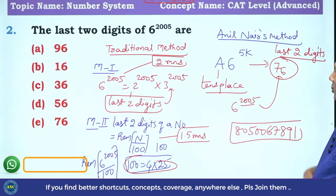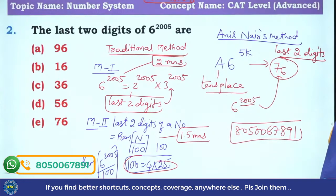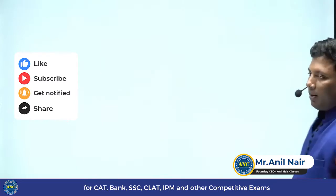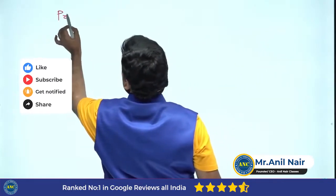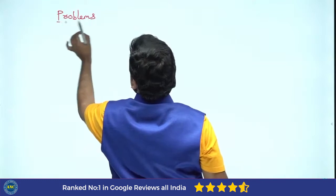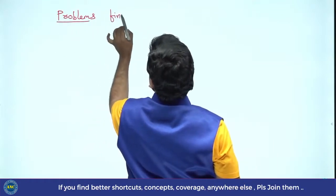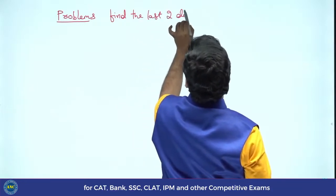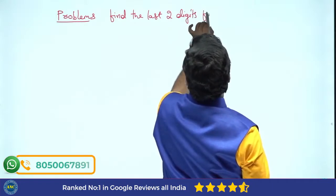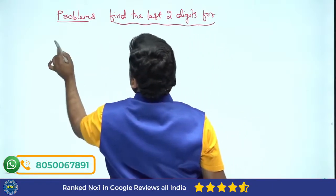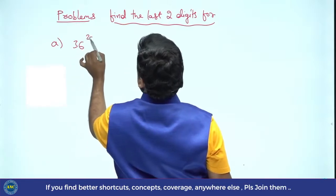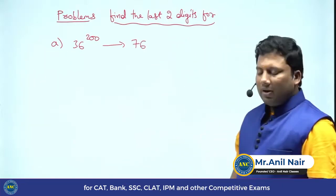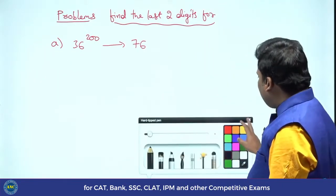Last two digits of 6 power 2005 - you don't need to use method 1 and method 2. Directly you can use. Some problems we will solve. Find the last two digits for 36 power 200. Answer is directly 76.